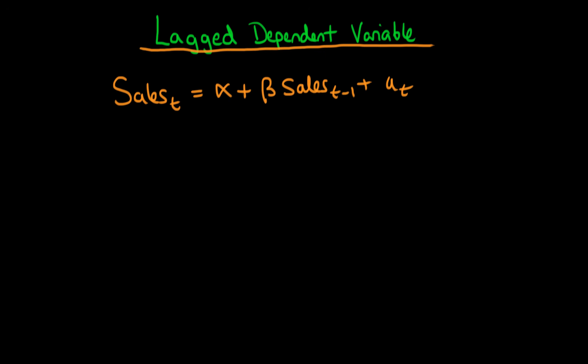Remember that the strict exogeneity assumption in this context says that the expectation of ut given the company's sales at some other period s has to be equal to 0, and that has to equal 0 for all values of s, including the situation where s equals t.